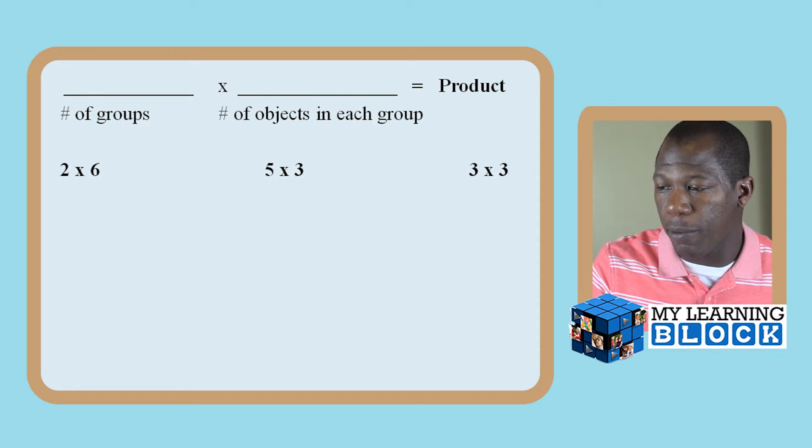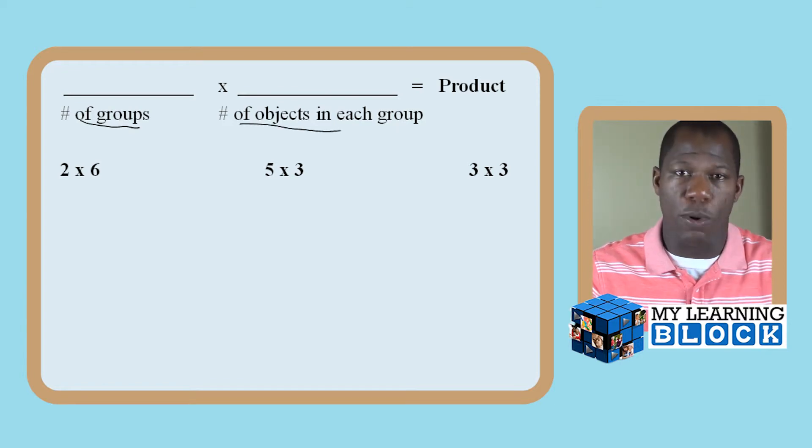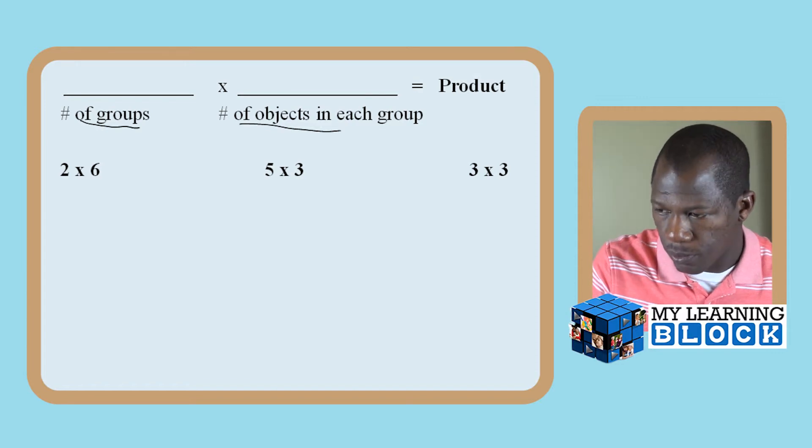Then you want to bring them to this level where they can see the actual math part and be able to use that and do that using groups. In the first problem, I see I have two times six. Now two is the number of groups and six is the number of objects in each group.